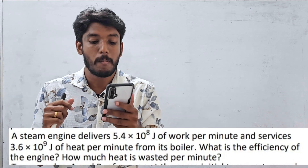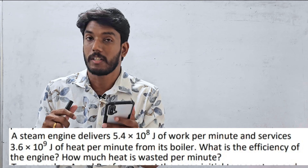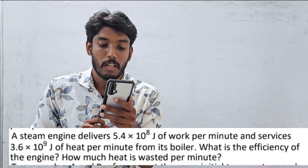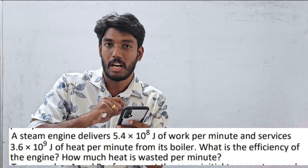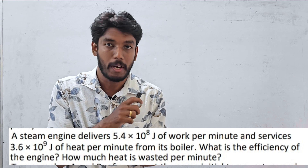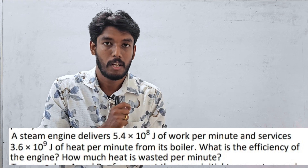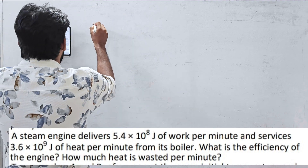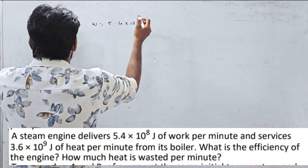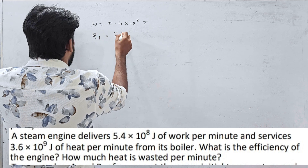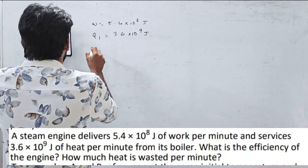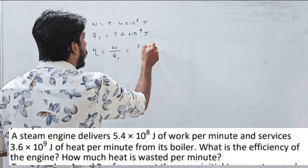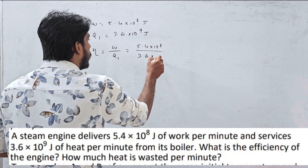A steam engine delivers 5.4×10⁸ joules of work per minute and receives 3.6×10⁹ joules of heat from its boiler per minute. What is the efficiency? The formula is η = W/Q1.